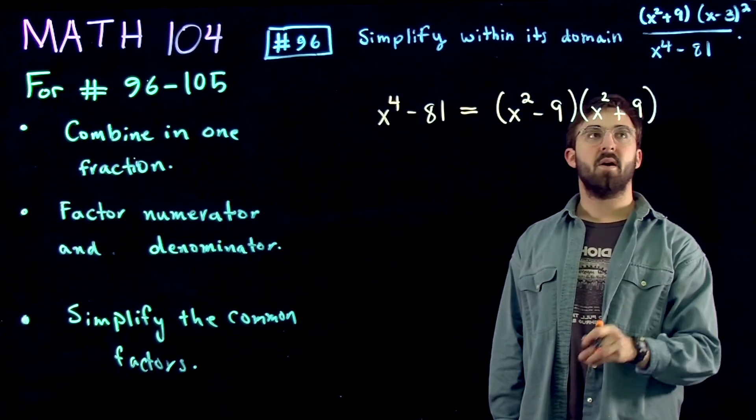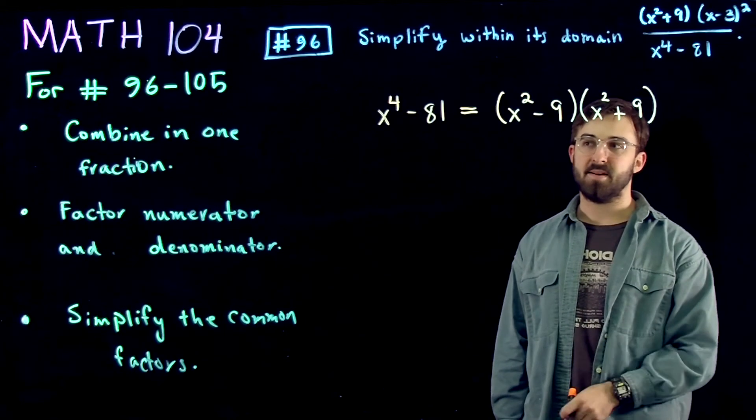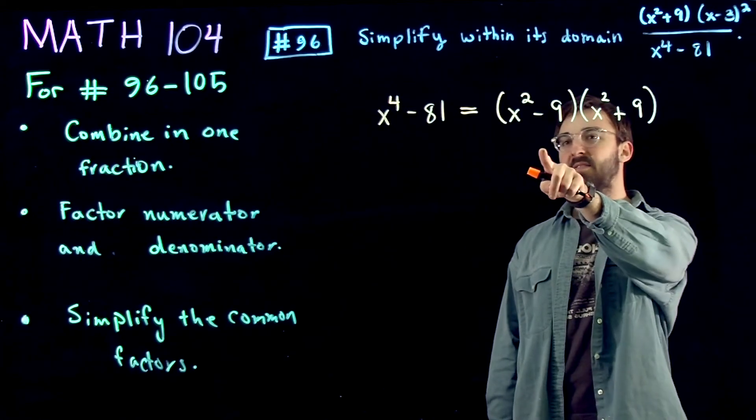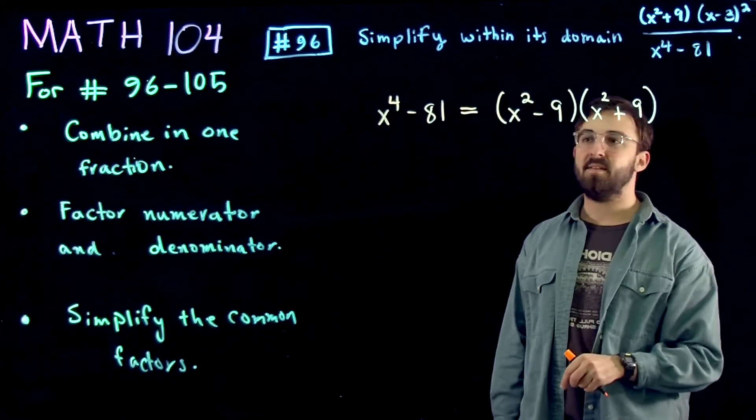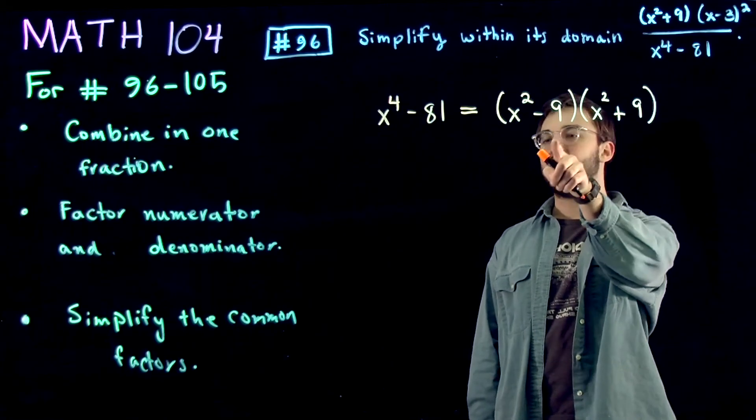So to come back to the original expression, actually this is your denominator, but we can factor x squared minus 9 using the difference of squares again. This is x squared minus 3 squared.